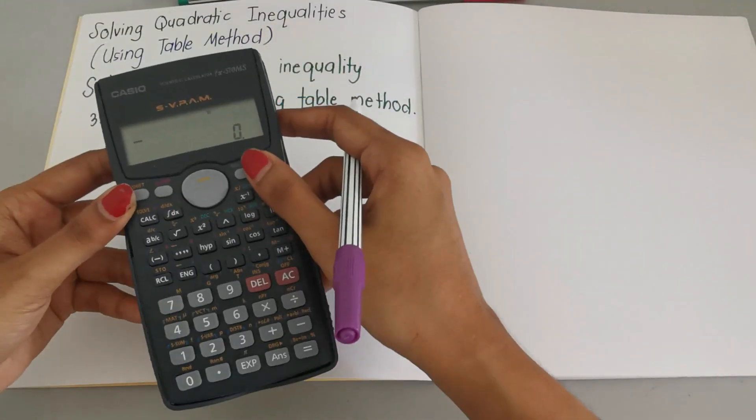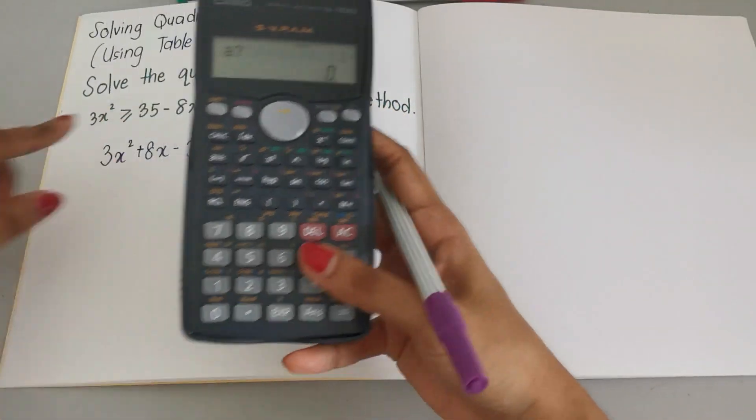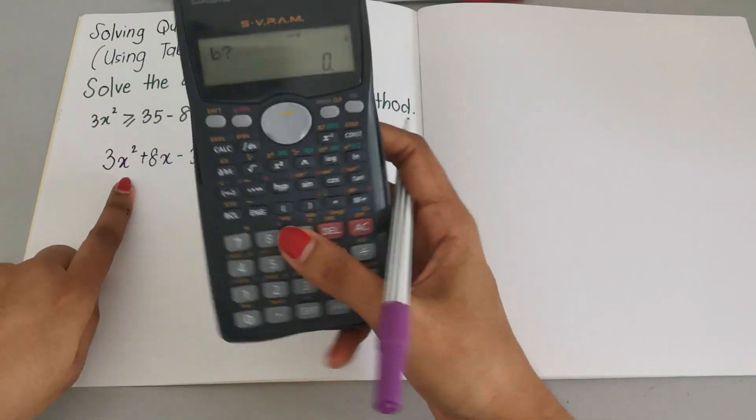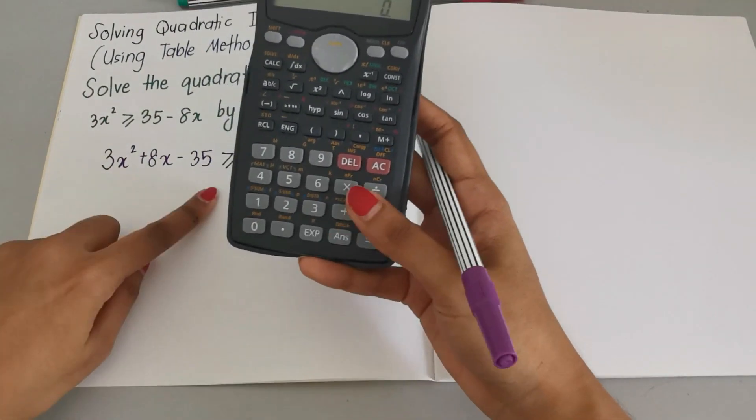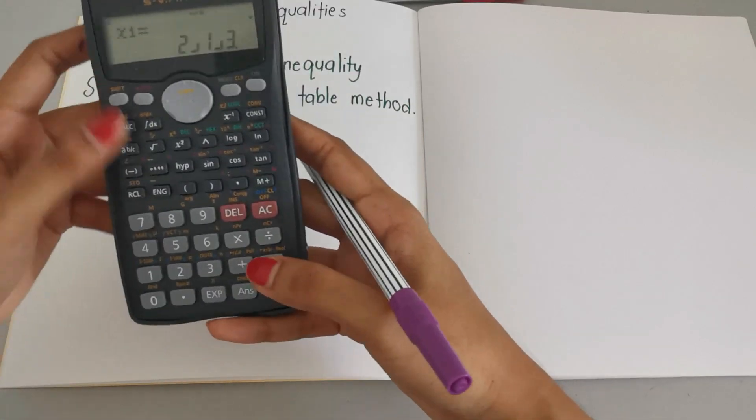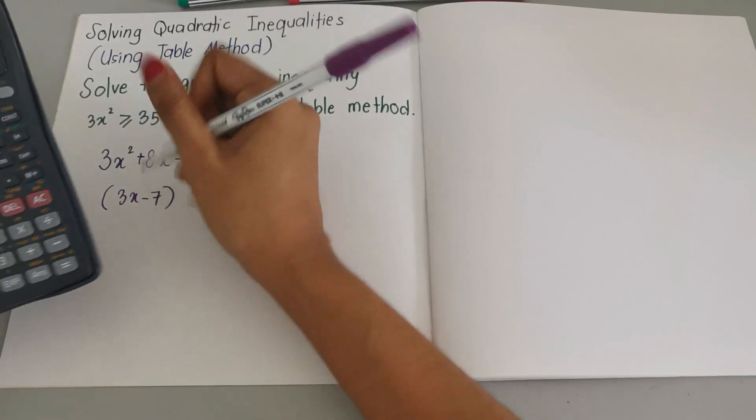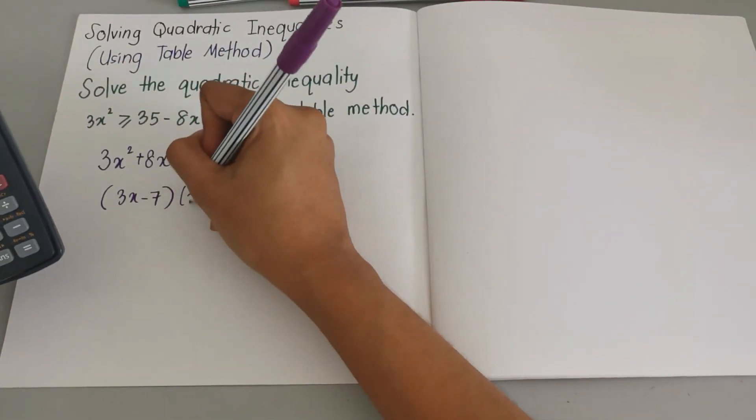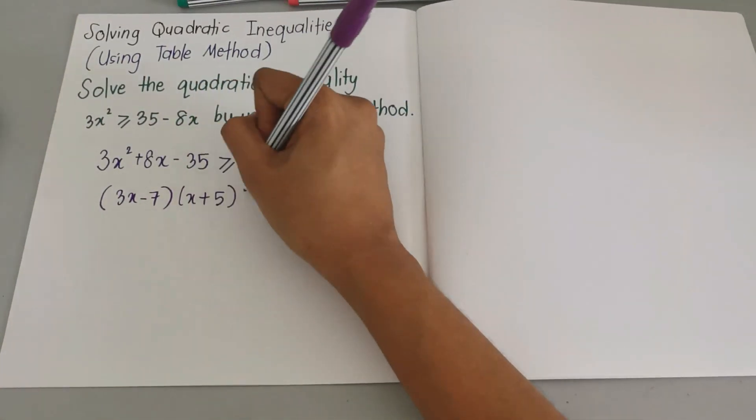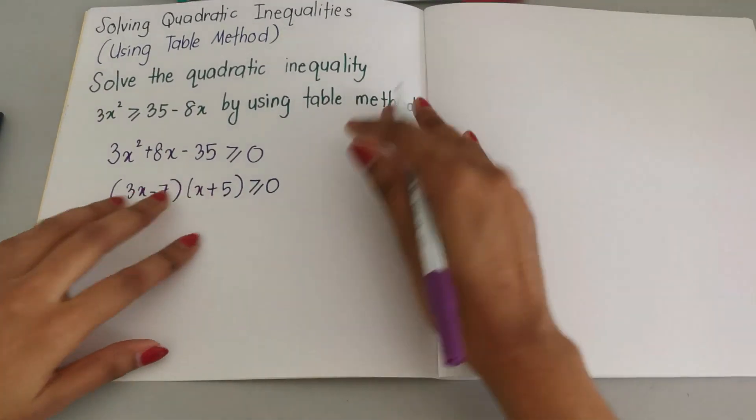Key in the value 3, 8, and negative 35. So we get 3x - 7 and the other factor is x + 5. These are our factors.